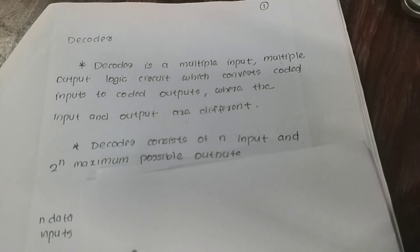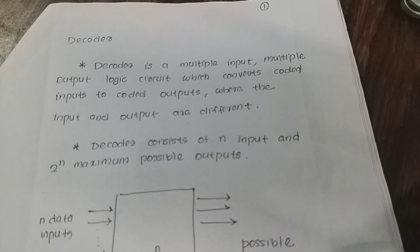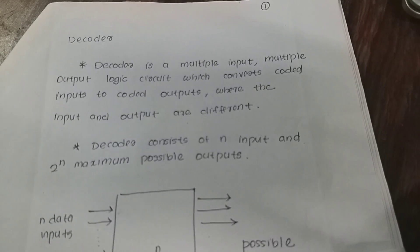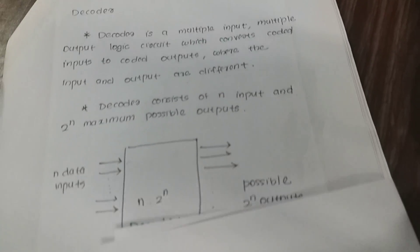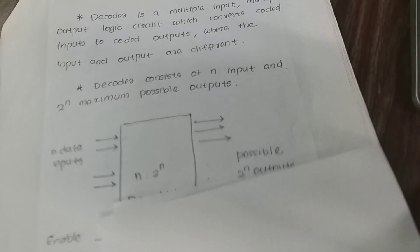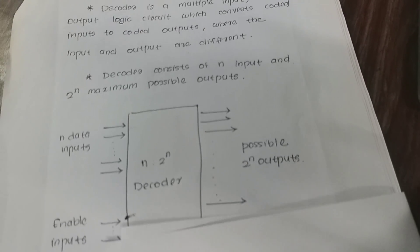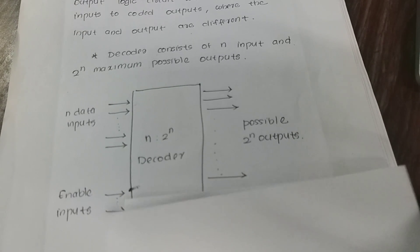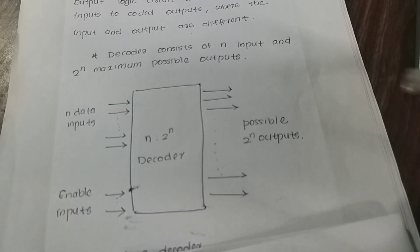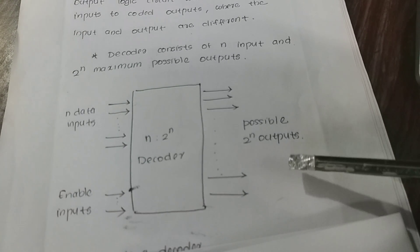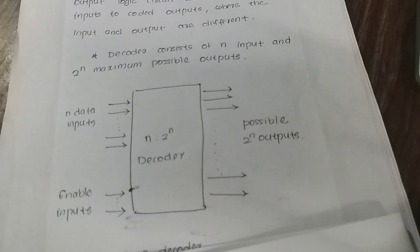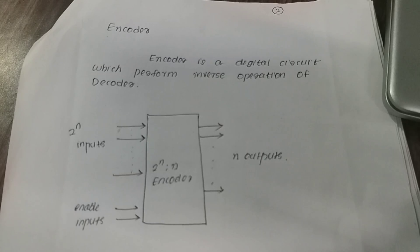In this figure, we will take a look at the definition. The Decoder has N data inputs and 2 raised to N outputs.